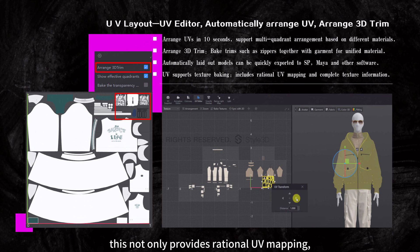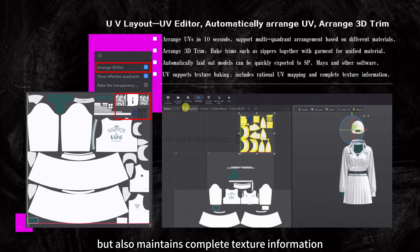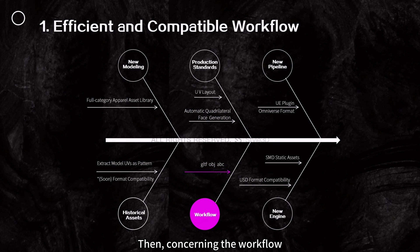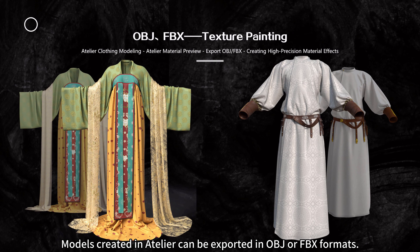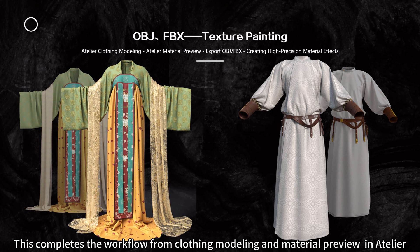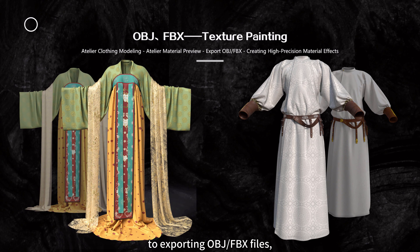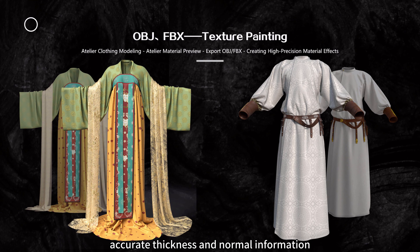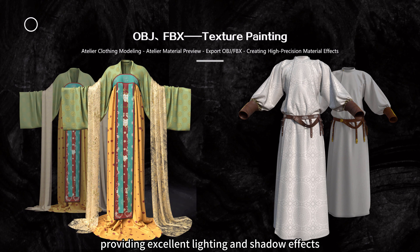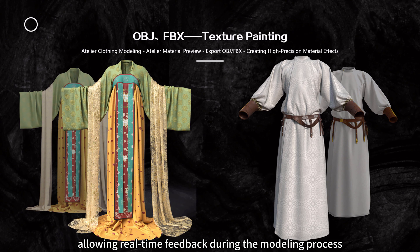UV supports texture baking, providing rational UV mapping while maintaining complete texture information. Models created in Atelier can be exported in OBJ or FBX formats, completing the workflow from clothing modeling and material preview to exporting files and creating high-precision material effects. Both formats perfectly encapsulate rational topological structures, proper UV mapping, and accurate thickness and normal information. Atelier's material preview utilizes V-Ray rendering, providing excellent lighting and shadow effects that closely resemble external rendering results, allowing real-time feedback during the modeling process.